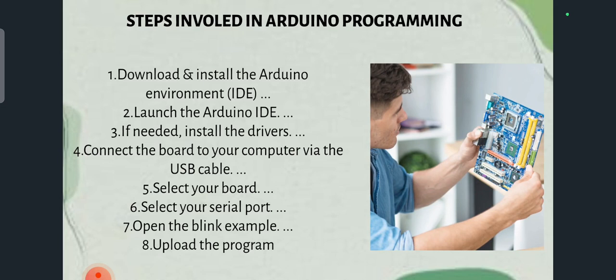The steps involved in Arduino programming are: while doing the program of Arduino on a computer by connecting an electronic device, you should follow these steps. First, download and install the Arduino environment. Then launch Arduino. If needed, install the drivers to connect the board to your computer through a USB cable. Select your board. Select your serial port. Open the Blink example. Upload the program and you will get the result.